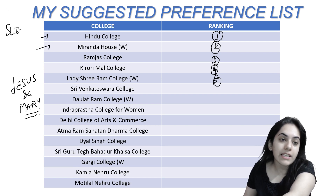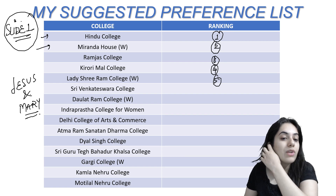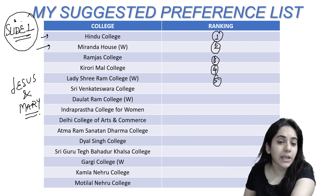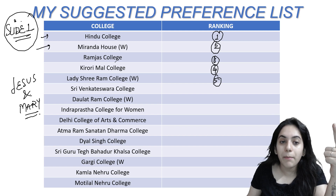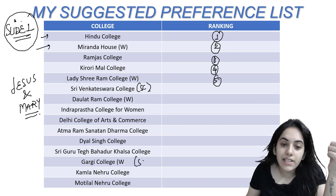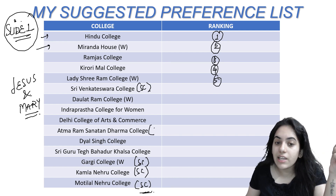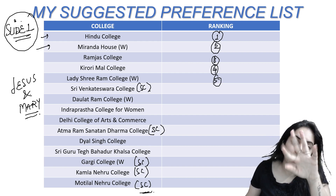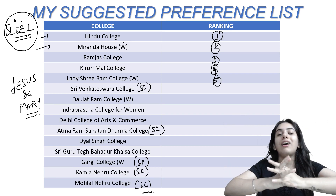This is Slide 1 of the preference list. You can check it out: Hindu, Miranda House, Ramjas, Kirori Mall, Lady Shri Ram, Shri Venkateshwar, Daulat Ram, IP College for Women, Delhi College of Arts and Commerce, Atmaram Sanatan Dharm, Dayal Singh, Shri Guru Teg Bahadur, Gargi, Kamala Nehru, and Motilal. This slide is a mix of South Campus and North Campus colleges. Venkateshwar, Kamala Nehru, Motilal, and ARSD College are South Campus. But I have placed them high on the preference list because of the overall reputation and the hype of North Campus colleges nearby.